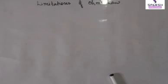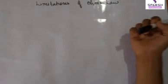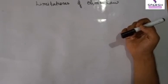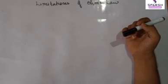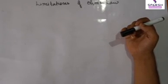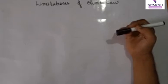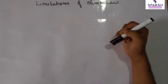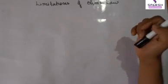Welcome class again. We are dealing with the fourth lecture of current electricity. In this lecture we are going to discuss the limitations of Ohm's law and variation of resistance with temperature or resistivity with temperature. So first of all talking about limitations of Ohm's law.